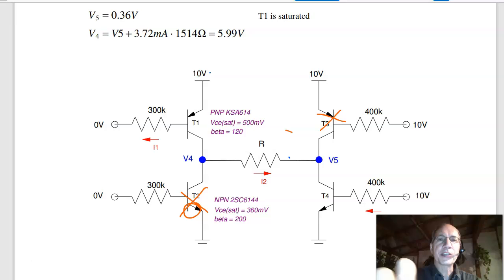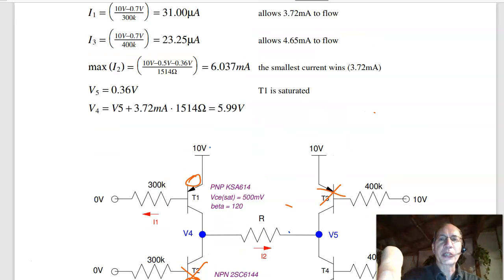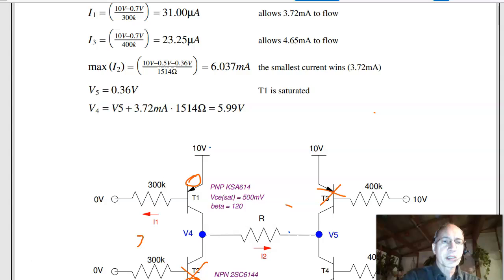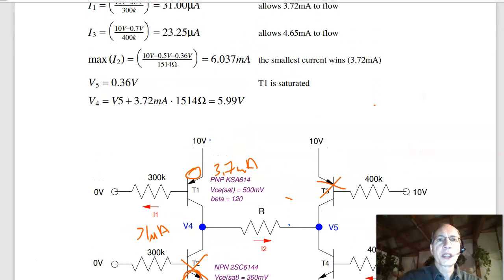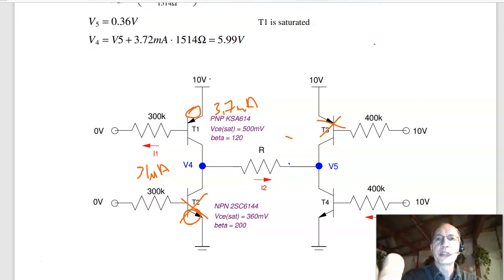T1, I've got 10 minus 0.7 or 0.7 volts across this diode. Gives you 9.3 volts across 300k. That means that I1 is 31 microamps. That allows beta IB, that allows up to 3.72 milliamps to flow. I3 down here is 10 minus 0.7 over 400k, 23 microamps. That allows beta IB 4.6 milliamps to flow through here.